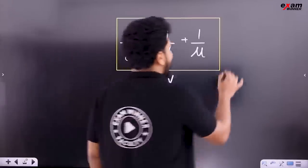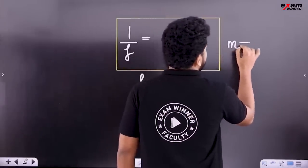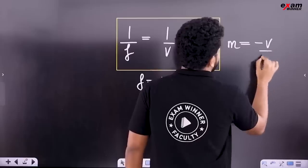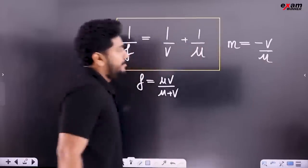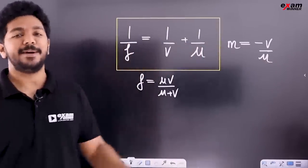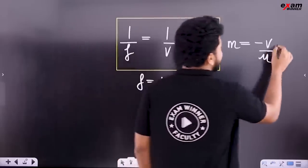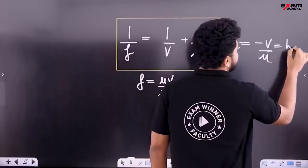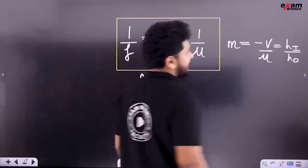Magnification is equal to minus v by u. Also, magnification is equal to height of image divided by height of object.